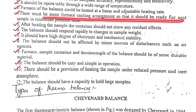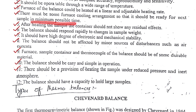Next, there must be some furnace cooling arrangement so that it should be ready for the next sample. For example, if we started from zero to 500 degrees centigrade, when we take the second reading the temperature should start from zero again. If the cooling arrangement is there, the furnace can be ready for the next reading very soon.